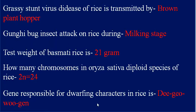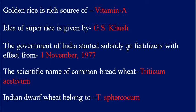The gene responsible for dwarfing characters in rice is the Dg0 gene. Golden rice is a rich source of vitamin A.